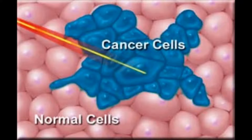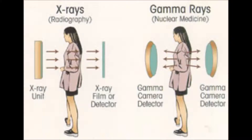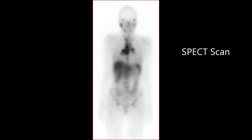In the procedure, the patient first lies still for 30 to 60 minutes where the camera will detect any of the gallium. This is imaged with a SPECT camera or with a SPECT-CT hybrid machine.